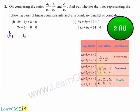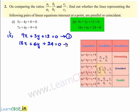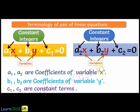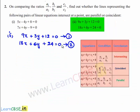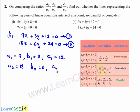Coming to the second bit. The given set of linear equations are 9x plus 3y plus 12 is equal to 0, and 18x plus 6y plus 24 is equal to 0. Comparing with the standard equations, we get a1 is equal to 9, b1 is equal to 3, c1 is equal to 12, and a2 is equal to 18, b2 is equal to 6, and c2 is equal to 24.